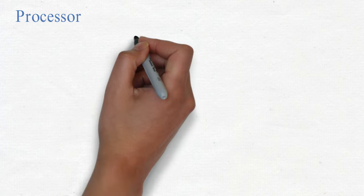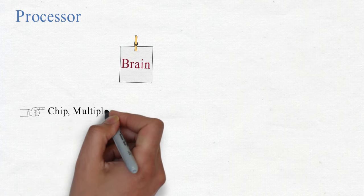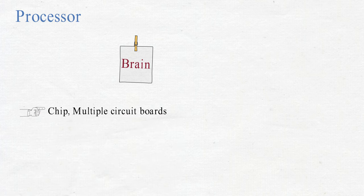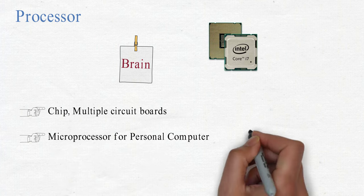Processor is the brain of the computer. It is a separate chip or multiple circuit board in a computer. The processor for personal computer is also called microprocessor.